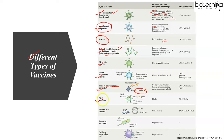A viral vector vaccine uses a viral vector to deliver genetic material — DNA — that can be transcribed by the recipient host cell as messenger RNA coding for a desired protein or antigen to elicit an immune response. Nucleic acid vaccines use genetic material from a disease-causing pathogen to stimulate an immune response. Live bacteria can also be used as a vector to deliver heterologous antigens as an effective alternative for new vaccine development. An antigen-presenting cell vaccine is a vaccine made of antigens and antigen-presenting cells.